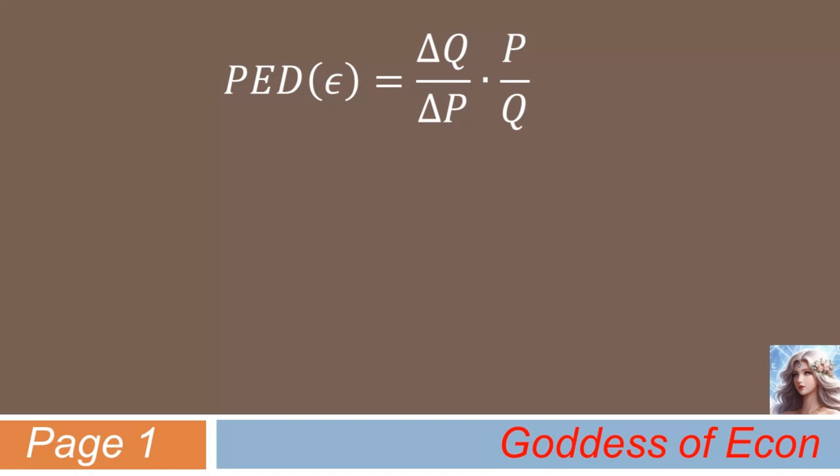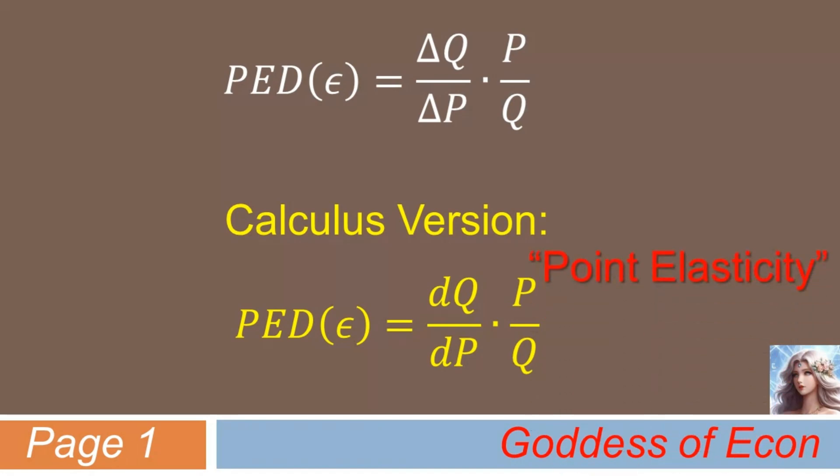Now, let me show you its calculus version. Using calculus, PED is defined as the first derivative of Q with respect to P, times P over Q. Here, dP can be thought of as an infinitesimal change in price, and dQ as the change in Q in response to the infinitesimal change in P. Just for your information, this calculus version of PED is sometimes called the point elasticity of demand.